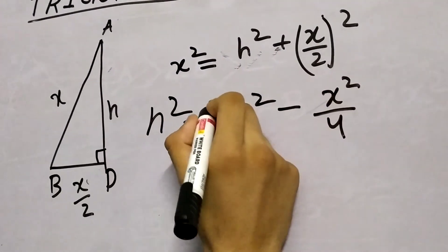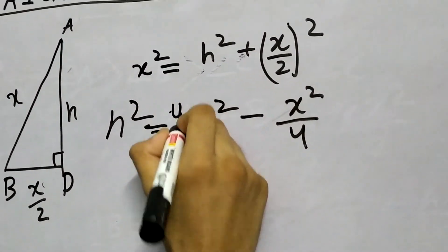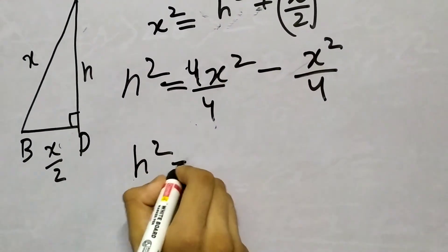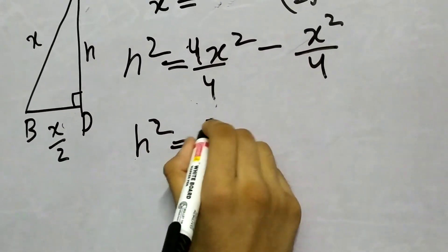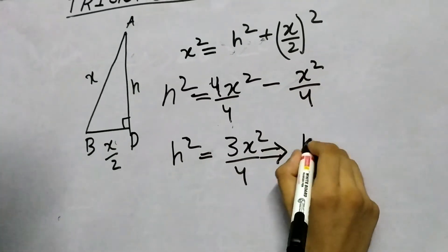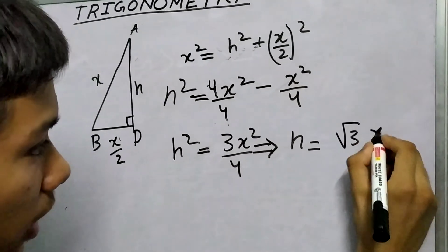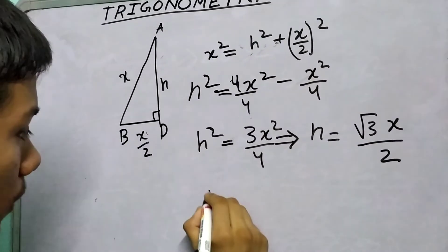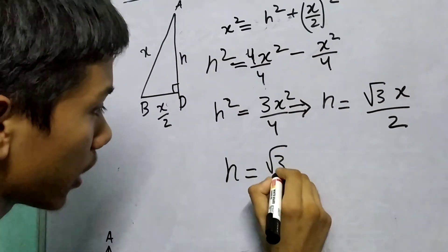We can write it as 4x²/4, and then we get h² = 3x²/4, and h = (√3 x)/2.